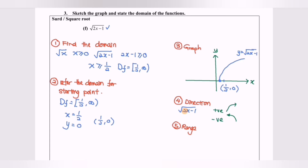Step five: determine the range. By referring to the graph, the minimum value of y is 0 and the maximum is positive infinity. So the range is [0, +∞). Thanks for watching.